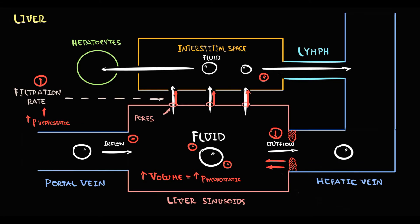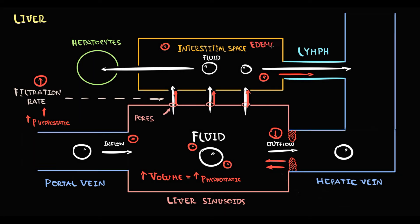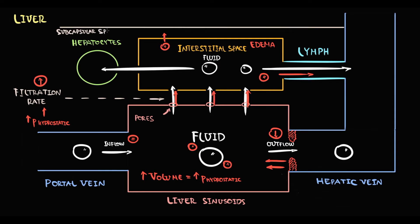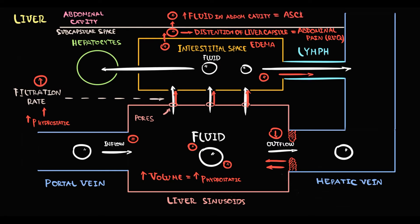At some point, fluid income to the interstitial space will be higher than lymphatic drainage, so fluid progressively accumulates in the interstitium, causing edema. From the interstitium, fluid leaves liver tissue and enters the space between liver tissue and the liver capsule. Accumulation of fluid in this subcapsular space causes distension of the liver capsule, and because the liver capsule has many nerve endings, this distension causes abdominal pain in the right upper quadrant. Some fluid also leaks through the capsule into the abdominal cavity — accumulation of fluid in the abdominal cavity is called ascites.